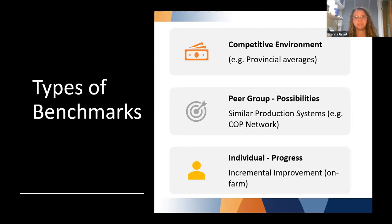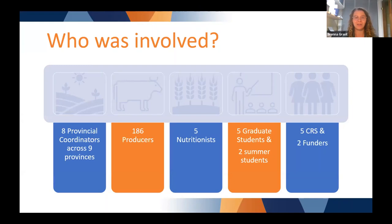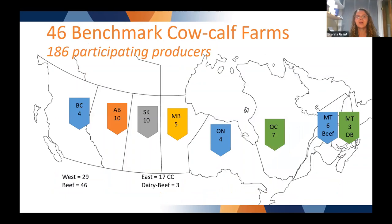Before we go further, I want to recognize that we had and continue to have many people involved in the Cost of Production Network. This wouldn't be possible without all of the producers that have participated over the last two years, our provincial coordinators, nutritionists, and various grad students, summer students, and staff. Right now we have 46 benchmark cow-calf farms across the country from coast to coast with 186 participating producers, with many in the west and representation in the east. Sign-up for the coming year is open now on the website.